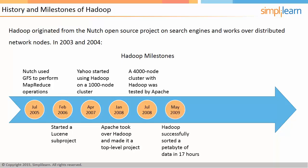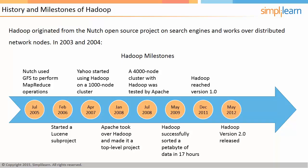In May 2009, a test revealed that Hadoop successfully sorted a petabyte of data in 17 hours. Hadoop reached version 1.0 in December 2011 and is open source and written in Java. On May 23, 2012, Hadoop 2.0.0 was released, delivering significant features including YARN, high availability for HDFS, HDFS Federation, HDFS Snapshots, NFSv3 access to data in HDFS, support for running Hadoop on Microsoft Windows, binary compatibility for MapReduce applications built on Hadoop 1.x, and substantial integration testing with the ecosystem. The current version of Hadoop is 2.7.1, released on July 6, 2015, and is completely open source and written in Java.